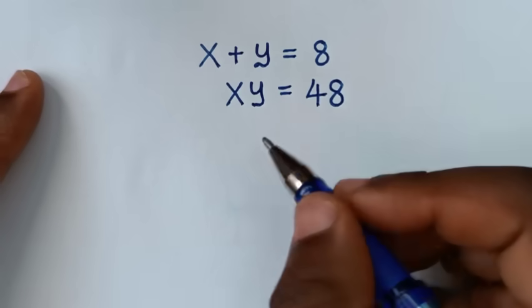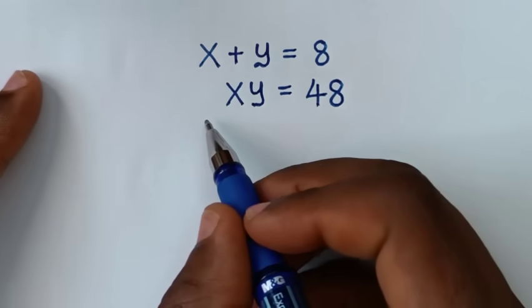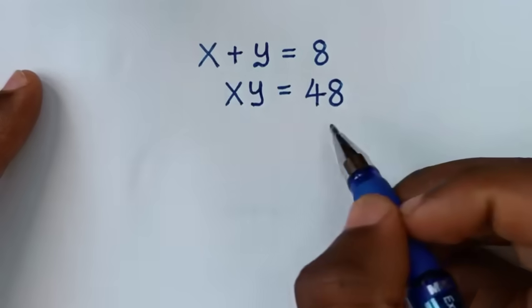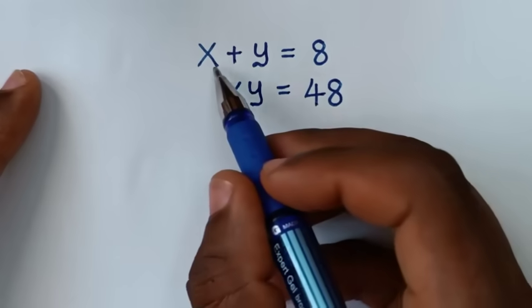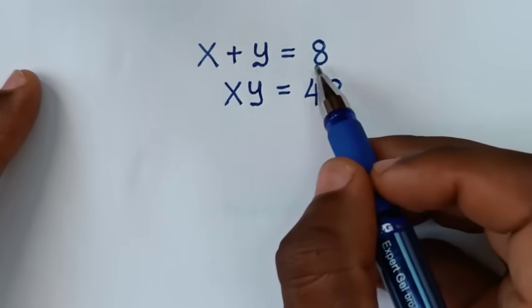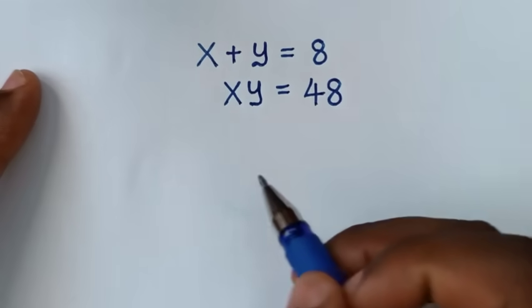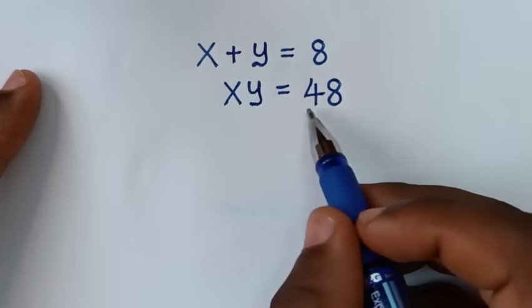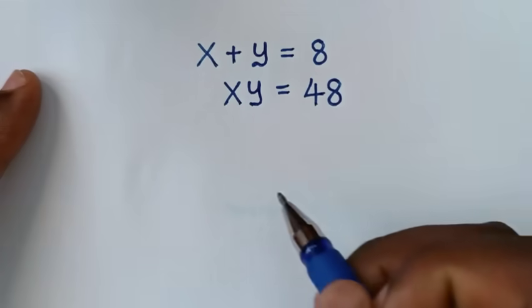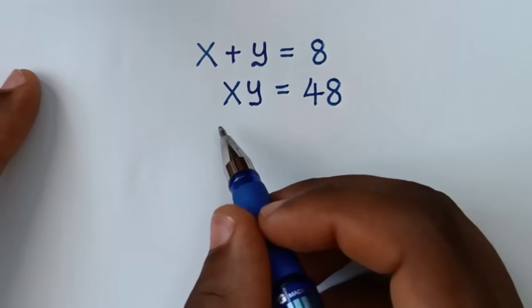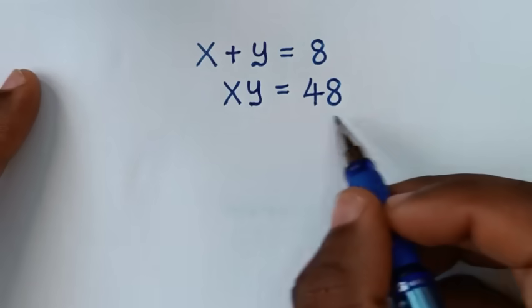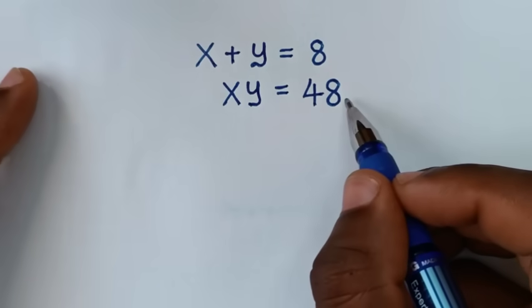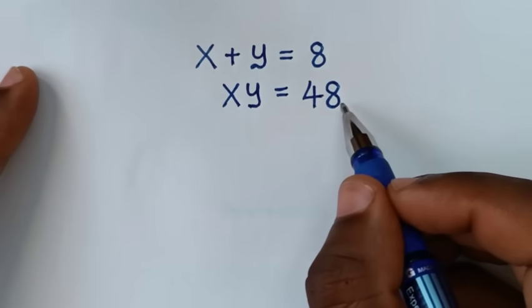Hello, you are welcome to solve this math problem, which is x plus y is equal to 8, x times y is equal to 48, to find the values of x and y from these two systems of equations.